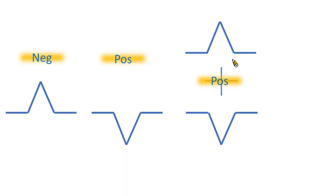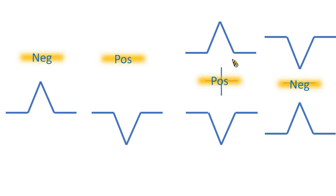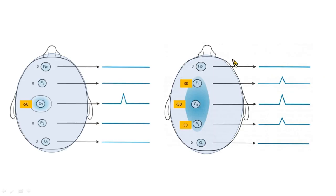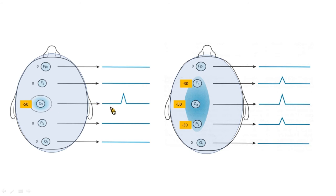Through those waves, we can understand the electrical field of the EEG. For example, looking at the left side picture first: the potential of FP1, F3, P3, and O1 is zero, so the EEG line is a flat line. The C3 potential is negative 50, so we record an upward wave.